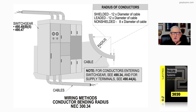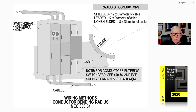Notice the radius we're talking about here with the cable — it's 8 times for non-shielded type cable, as shown in the radius of conductors. And that's exactly what figure 17-28 is illustrating to the user of the NEC, dealing with conductor bending radii using wiring methods.